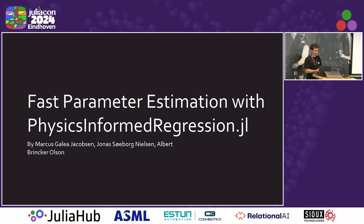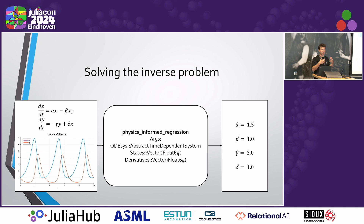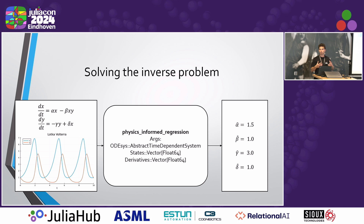The package is called PhysicsInformedRegression, and it's essentially a fast way to compute parameters from modeling with differential equations. Most of you will know what the inverse problem is — if you have data described by some dynamical system, you should be able to estimate the parameters that best describe the behavior of the data. We already have many ways to do this in the SciML ecosystem, but I'm proposing a method that rather than using non-linear regression just uses an ordinary least squares estimate to get quick results.